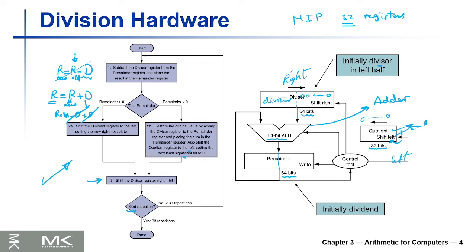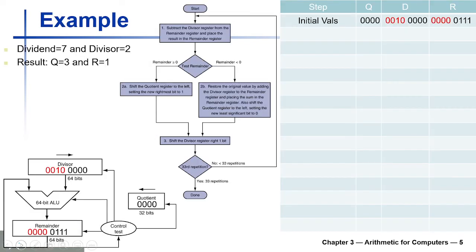Let's do an example. Let's divide 7 by 2 using 4-bit registers. Seven in four bits is 0111. The divisor is 2, which is 0010, but we put it in the left half to make it 0010 0000 as an 8-bit value. The expected quotient should be 3 and the remainder should be 1.